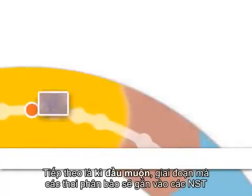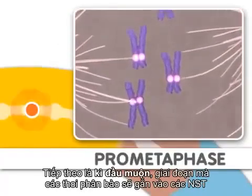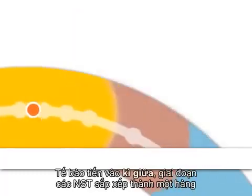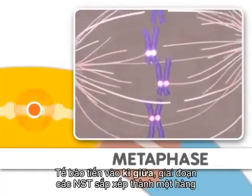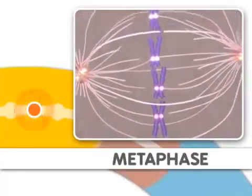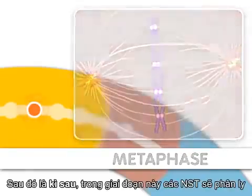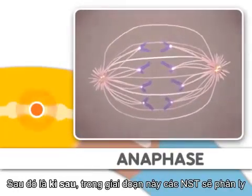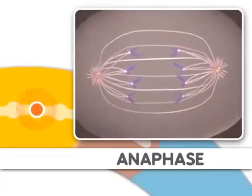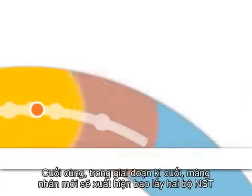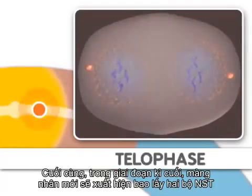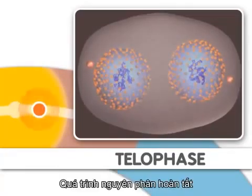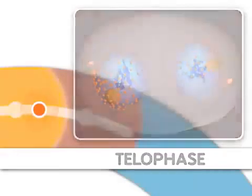Next comes prometaphase, where microtubules attach to the chromosomes. This is followed by metaphase, where the chromosomes align. Metaphase is followed by anaphase, where the chromosomes separate. Finally, during telophase, nuclear membranes reappear around the two sets of chromosomes. Mitosis is now complete.